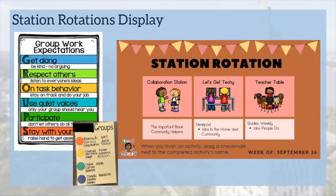Next, we'll discuss groups. With your groups, it just depends on how you want to group students — whether that's based on ability level, interest, or learning style. That's definitely up to the discretion of the teacher. But you do want to have those groups posted in your classroom so students know what group they belong to and which station they should rotate to daily. Finally, you'll want to have the station rotations displayed on the board so students know what activities they will complete in each station. Every station should have an accountability portion where students have something they must complete and submit. We always remind students: when you finish an activity, either drag a check mark or place their assignment into a folder.